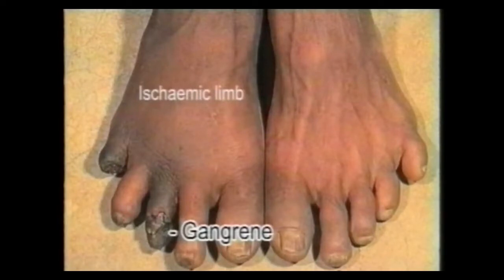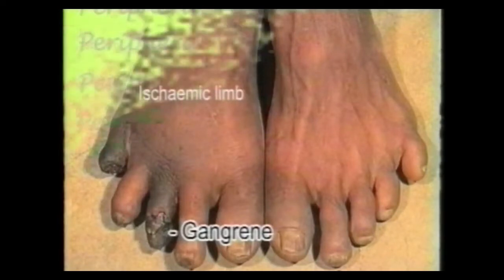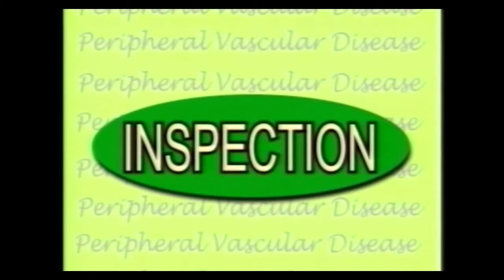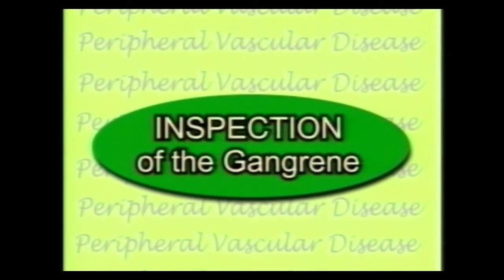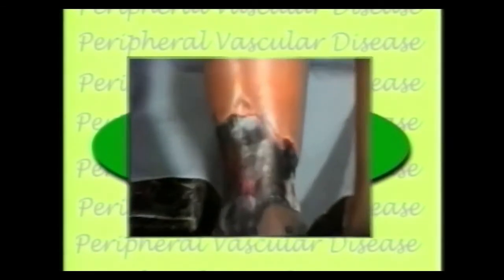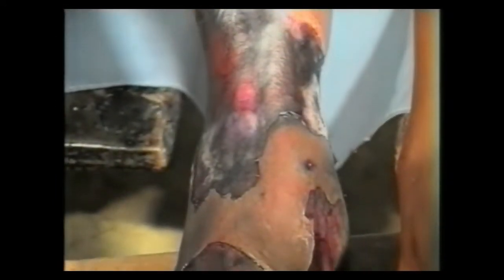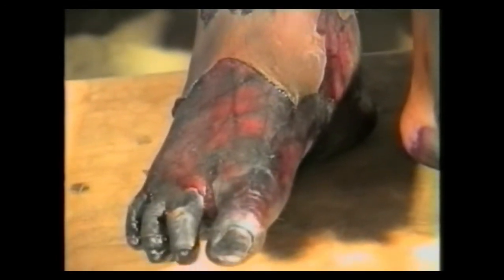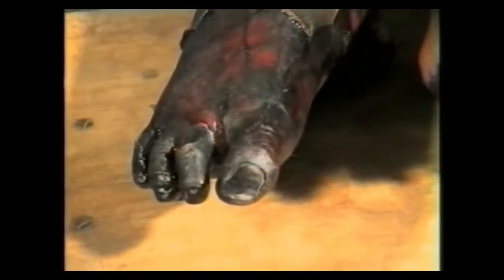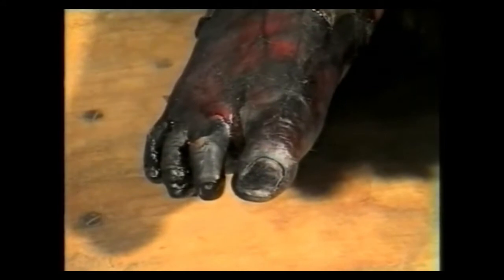We begin our examination with inspection of the affected limb. On inspection of the gangrenous area, it shows a dark discoloration and a shriveled up mummified appearance if it is dry gangrene. Note the dry, shriveled up appearance of the dry gangrene of this right foot and leg.